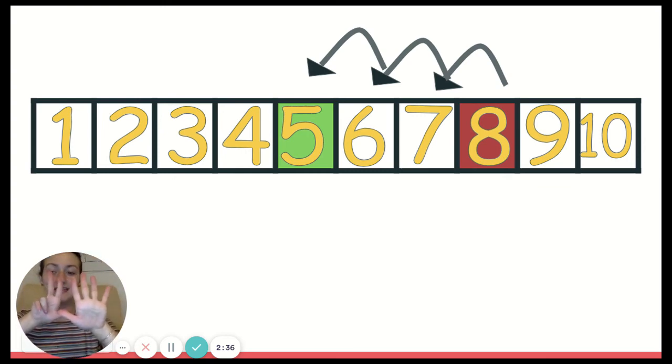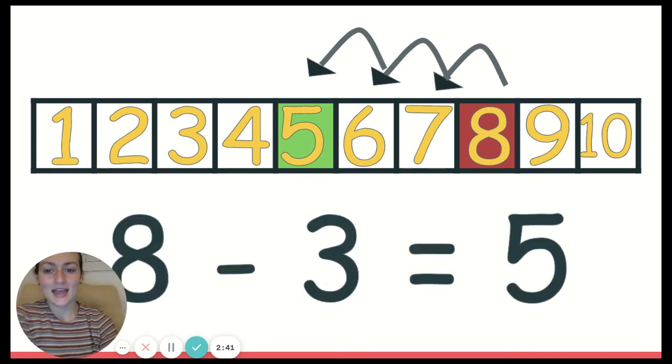Because if I have 8 and I take 3 away—1, 2, 3—we only have 5 left. 8 take away 3 is 5.